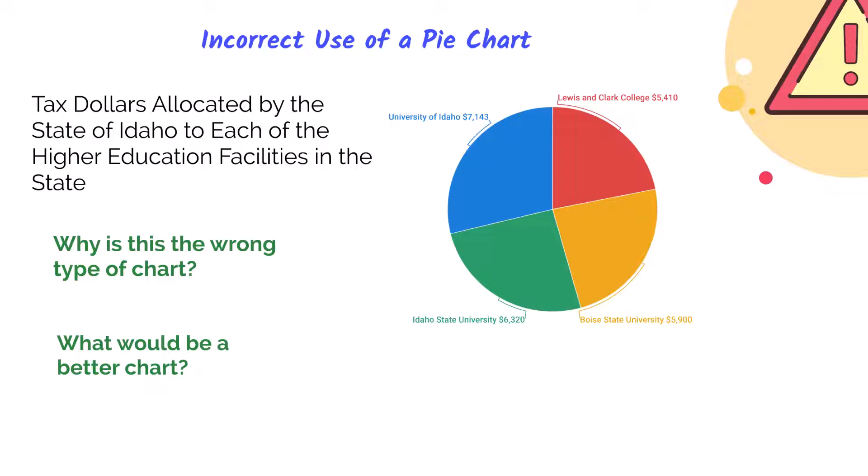Pie charts are sometimes mistakenly used when a bar chart would have been more appropriate. A few years ago, the student leaders at Boise State University wanted to draw attention to the funding inequities among the four public universities in Idaho. To do so, they rented a large billboard which contained a large pie chart. Each slice indicated the funding per student at the given university. For a pie chart to be appropriate, the slices should represent the parts of a whole — instead, the amounts merely represented dollars of state money spent per student at each university.